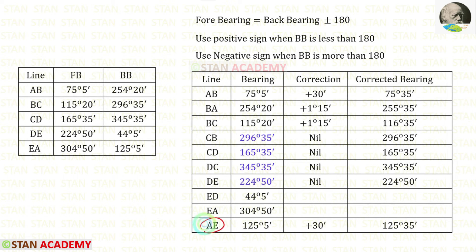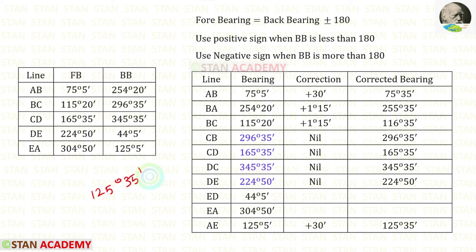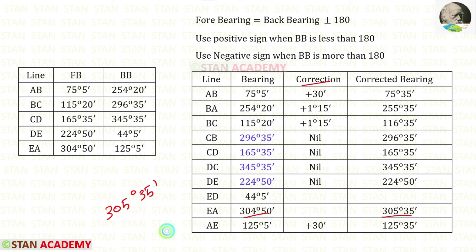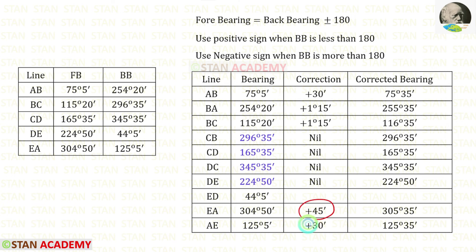We know that AE is the back bearing of EA. Using the corrected bearing for AE — 125 degrees 35 minutes — since this is less than 180 degrees we use the positive sign: 125 degrees 35 minutes plus 180 degrees gives us 305 degrees 35 minutes. Now let us find the correction: 305 degrees 35 minutes minus 304 degrees 50 minutes gives us positive 45 minutes.